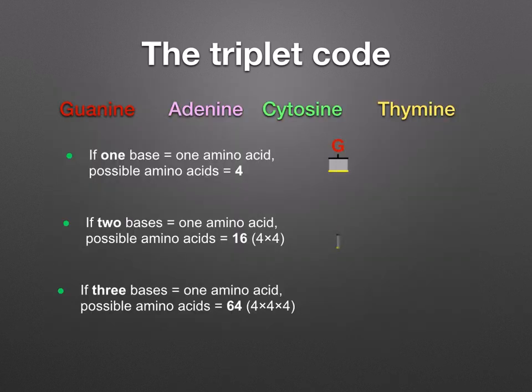Let's have a look at the triplet code. You've got only four different bases — adenine, guanine, cytosine, and thymine — present in DNA. Now, if each of these coded for a different amino acid, how many amino acids would you have? Only four, and this is inadequate because we need at least 20.